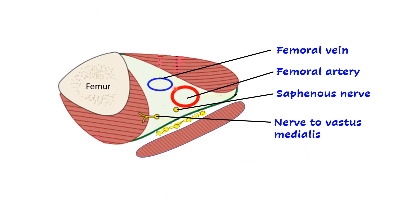Here in the diagram we can see the contents: the femoral vein, the femoral artery, and two nerves — branches of the femoral nerve, the saphenous nerve and nerve to vastus medialis. The two branches of the obturator nerve have not been shown in this diagram.